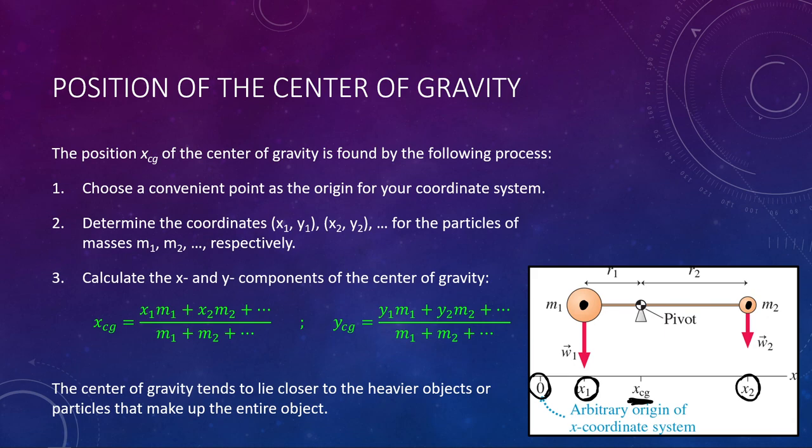Using that information, we calculate the center of gravity xcg using the equation: xcg = (x1·m1 + x2·m2 + …) divided by the total mass. I won't derive this here — you can reference the textbook if you're interested in where it comes from. If the problem is two-dimensional, we also need the center of gravity in the y direction, using the same formula with y coordinates instead.